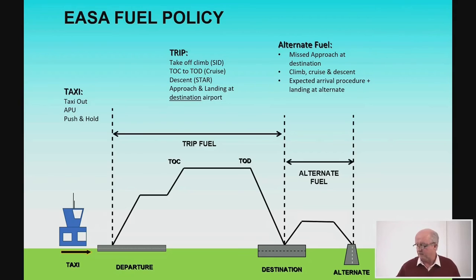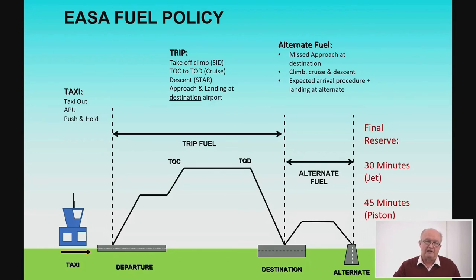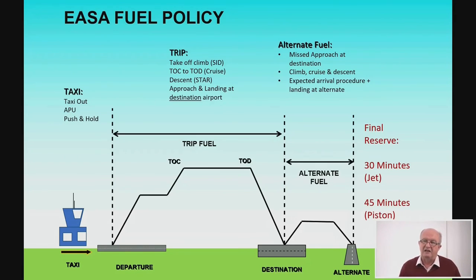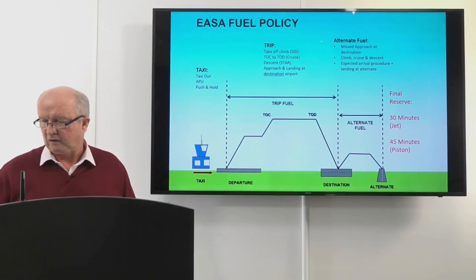Once you get to your destination, you need the final reserve. For jet or turbine engines — which includes turboprops — you must have 30 minutes in the overhead at 1,500 feet above the elevation of the aerodrome. For piston or reciprocating engines, you need 45 minutes. You must arrive overhead with that fuel in the tanks; if not, you have to divert and pick up more fuel.